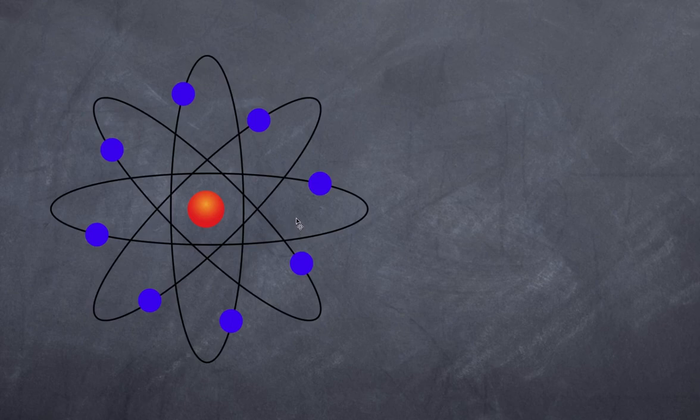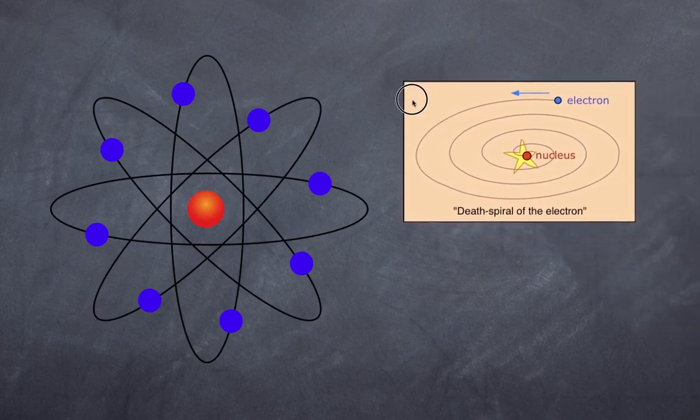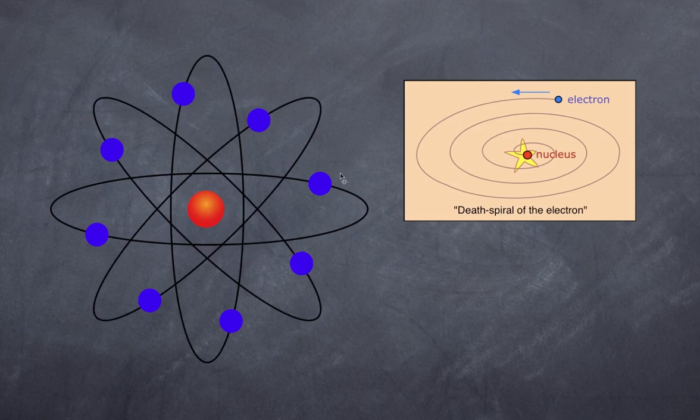However, this particular model has one big flaw. Can you work out what it is? The one big flaw is that because the electron is moving in a circle, it is therefore undergoing circular motion with centripetal acceleration. Because classical physics tells us that an accelerating electron should be releasing energy in the form of electromagnetic radiation, then the electron would be losing energy and therefore should spiral in and eventually collide with the nucleus. We know that is not what happens, so something else is going on.